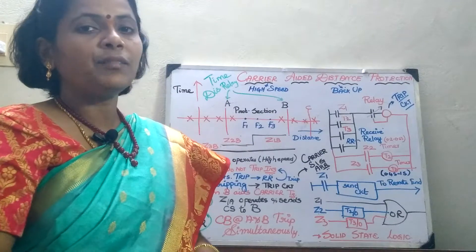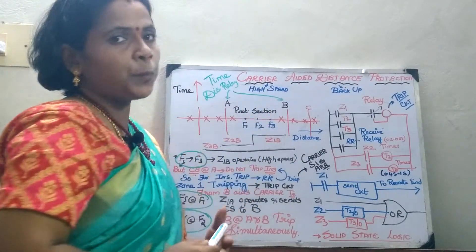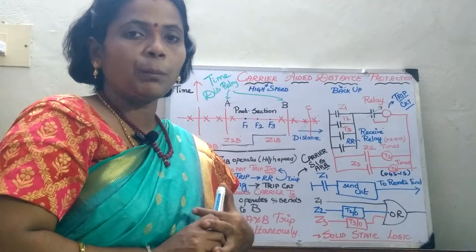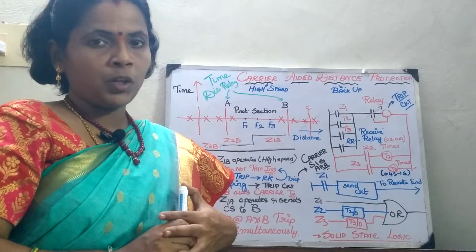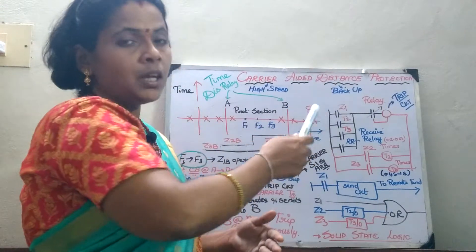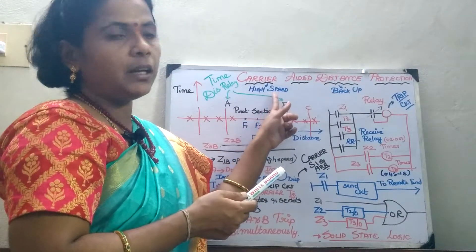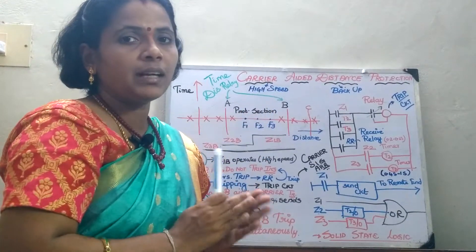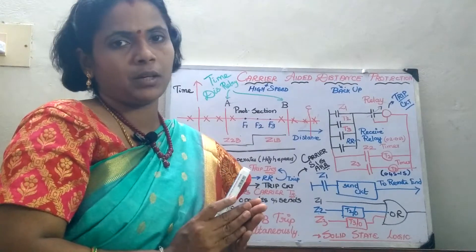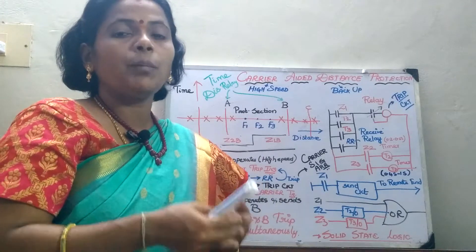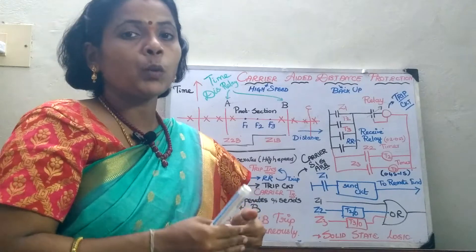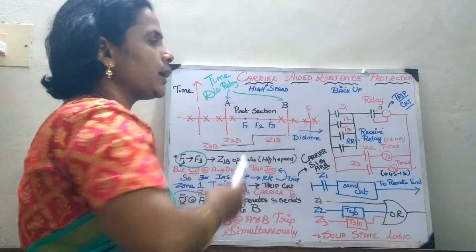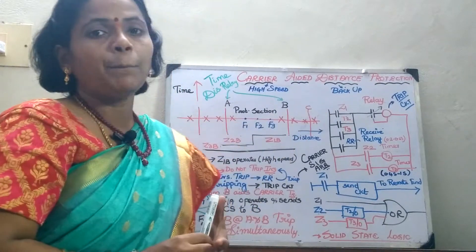The advantage of carrier protection is high speed — it offers unit protection. Whereas distance protection helps in backup protection; it is a non-unit protection. The disadvantage of carrier aided protection is that it can only be used for primary protection, but in reality both primary and backup protection are required. So we are going to combine both schemes to attain better benefit: high speed is offered by carrier protection and backup protection is offered by distance protection.